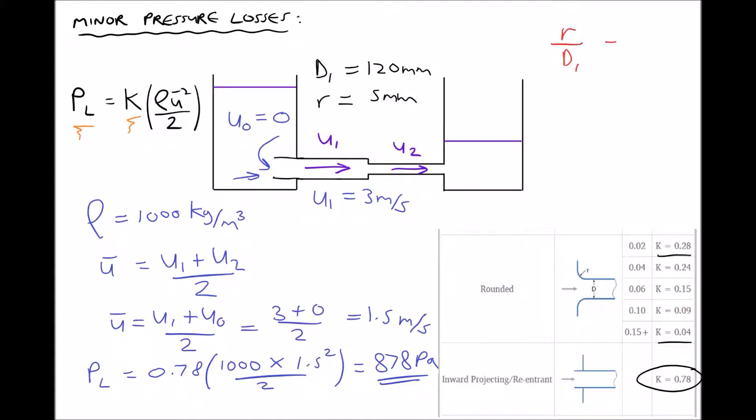So the first thing that we need to do is find the value of our ratio radius over diameter. In this case it's the diameter of pipe 1. Providing we use the same units for both the radius and the diameter, it doesn't really matter whether we work in meters or millimeters. So we'll work in millimeters and we get 5 over 120, giving us a value of r over d equal to 0.042. When we reference the r over d column here, we can see that our value of 0.042 rounded to two decimal places equals 0.04. Therefore we're going to use a K value equal to 0.24.